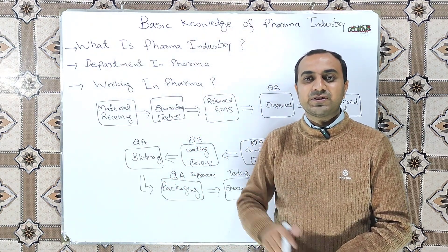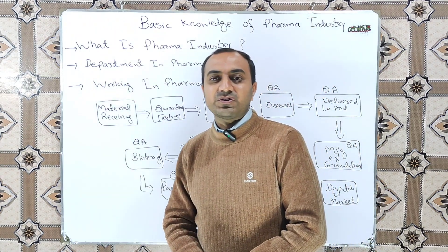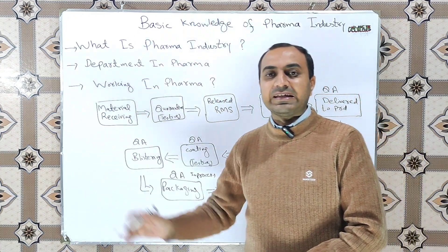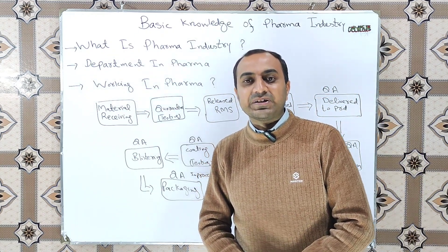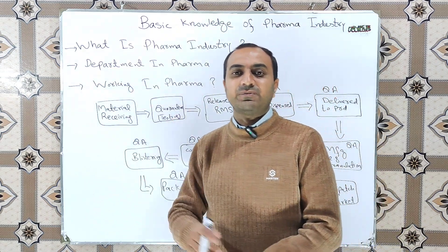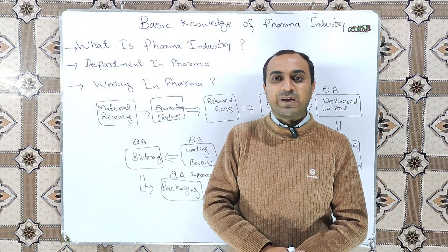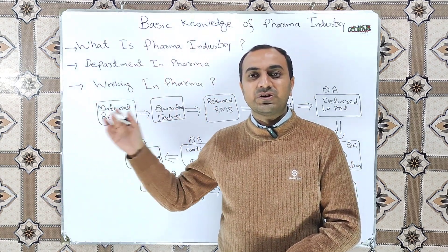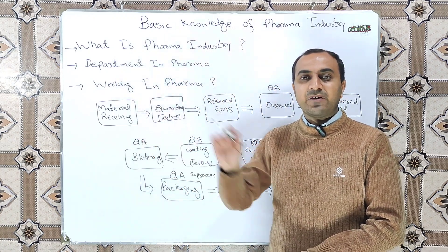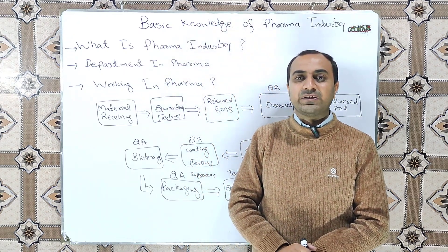There are different types of departments in the pharmaceutical industry which work in collaboration with each other to ensure the production of good quality drug products. Now we will discuss the basic layout of how materials move in the pharmaceutical industry and how the drug product is manufactured. This entire procedure follows a unidirectional flow, and we will also discuss the involvement of various departments.